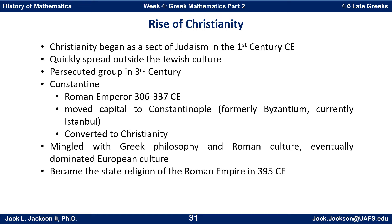Constantine moved his capital to a city he renamed Constantinople, formerly known as Byzantium and currently known as Istanbul. Although he was not a Christian most of his life, he did convert to Christianity, and Christianity became much more tolerated in the empire. Eventually Greek philosophy and Roman culture mingled with Christianity, and this combination became the dominant influence on European culture. Christianity became the state religion of the Roman Empire in 395 of the Common Era — so in about 400 years it went from barely existing, to being persecuted, to becoming the dominant state religion.